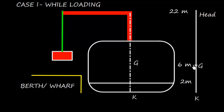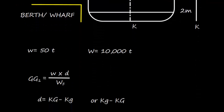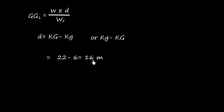And we can easily calculate that the value of D will be KG of the ship, which is 6 meters, and the KG of the weight, which is 22 meters. So the value of D is 16 meters.